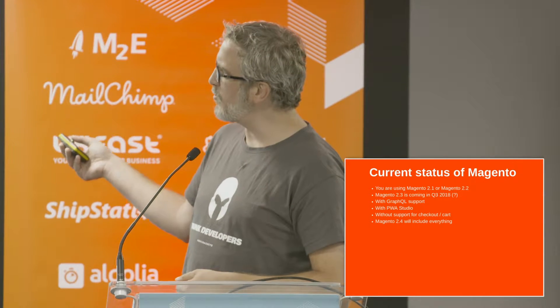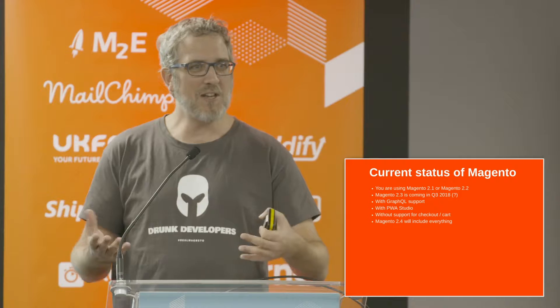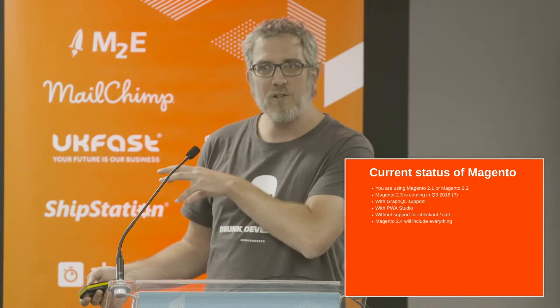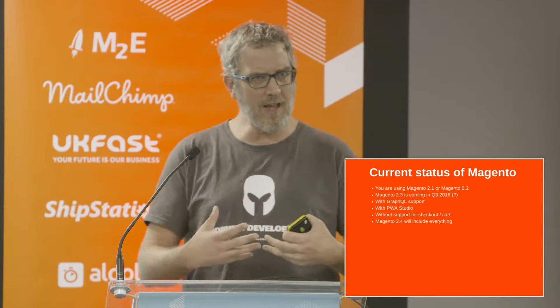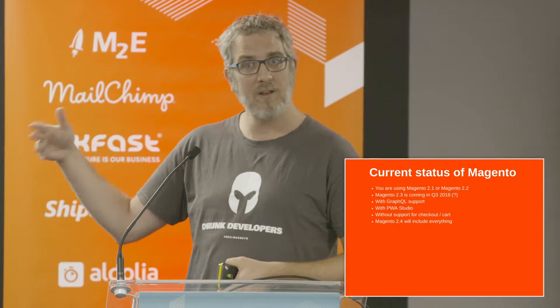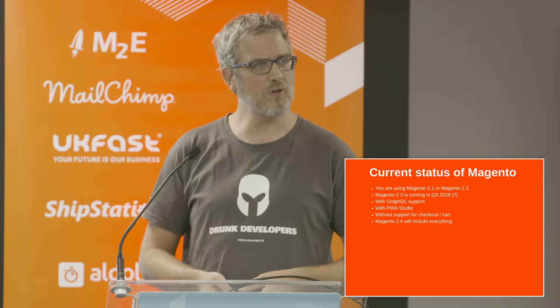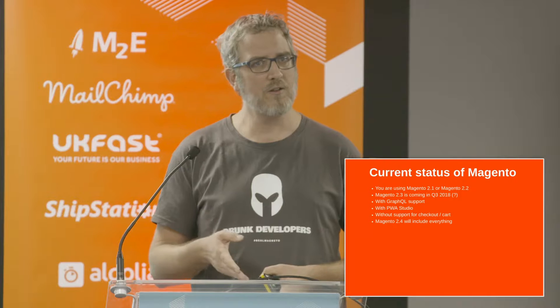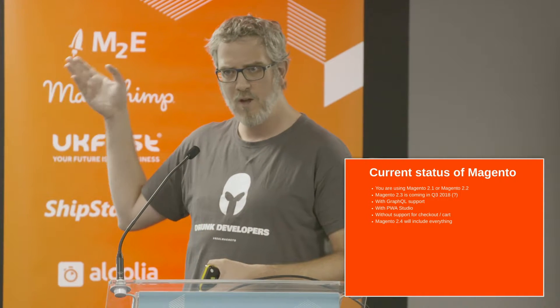Currently we're using Magento 2.1 or 2.2. Magento 2.3 is on the rise — possibly Q3 2018, which is 16 days from now, so probably a few more months. Once it arrives, there will be GraphQL support and PWA Studio. PWA Studio allows you to build a PWA based on React. However, there's a minor shortcoming: there's no support for checkout and cart yet. So a full migration from 2.2 to 2.3 isn't possible yet — the whole e-commerce checkout functionality isn't there. What is there is the catalog.